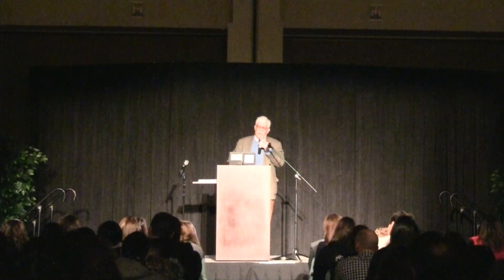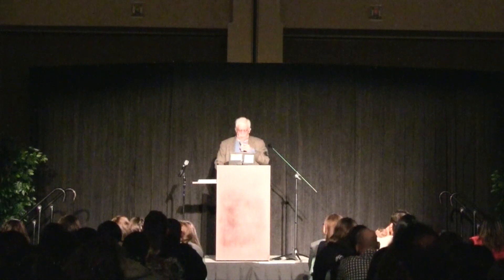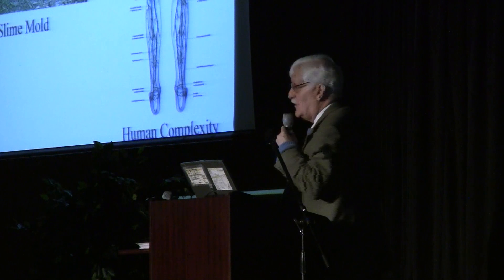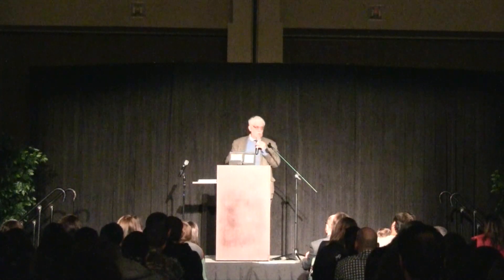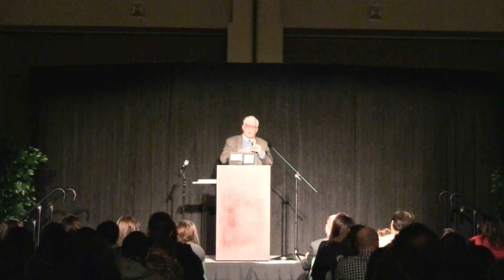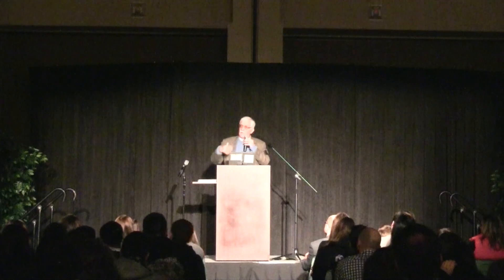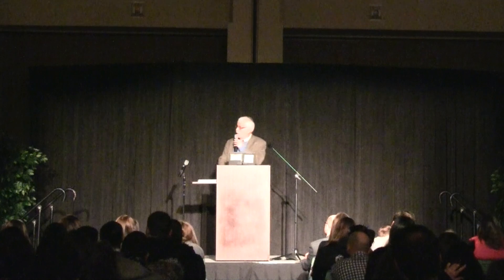Evolution violates the first law of thermodynamics: energy can neither be created nor destroyed. But if I want to get from a slime mold to a human being, I've got to create energy — so that's a violation. And it violates the second law of thermodynamics, which says that throughout time in the natural world, things are continuously disintegrating — not evolving. They're decaying. You take your car and leave it outside for six months: it doesn't shine itself into a Cadillac, it degenerates continually with rust. That's the general theorem of entropy. Everything is running downhill — you can't expect these things to just change themselves.